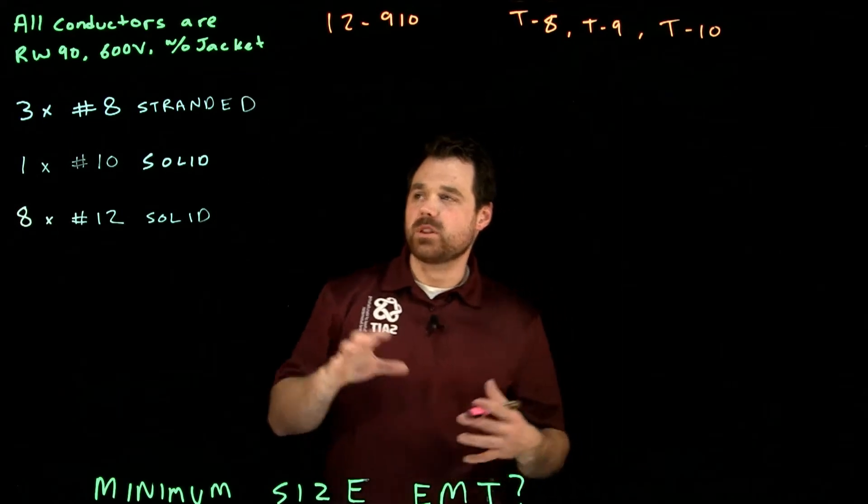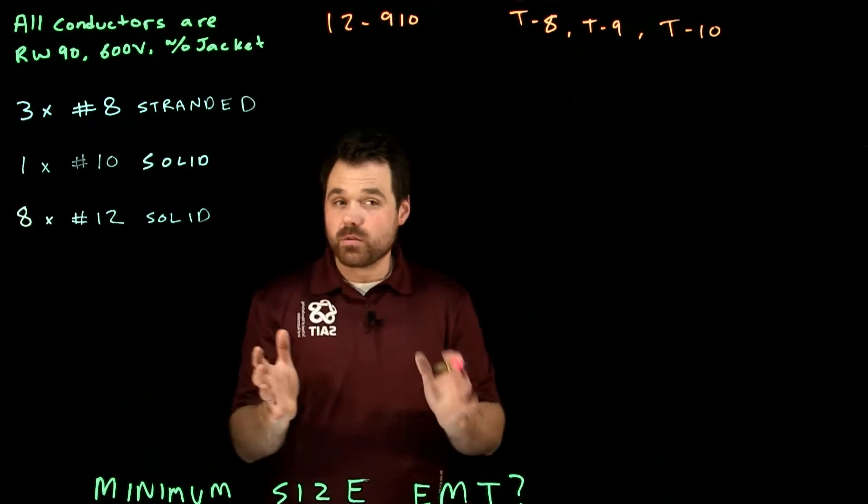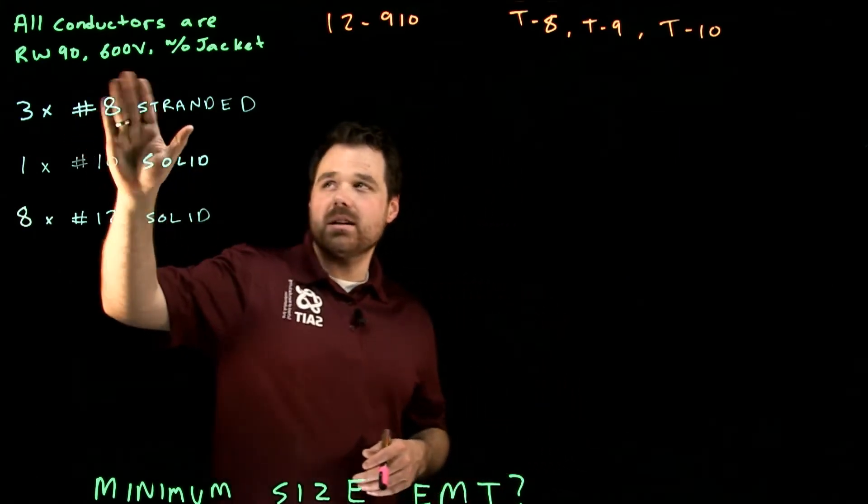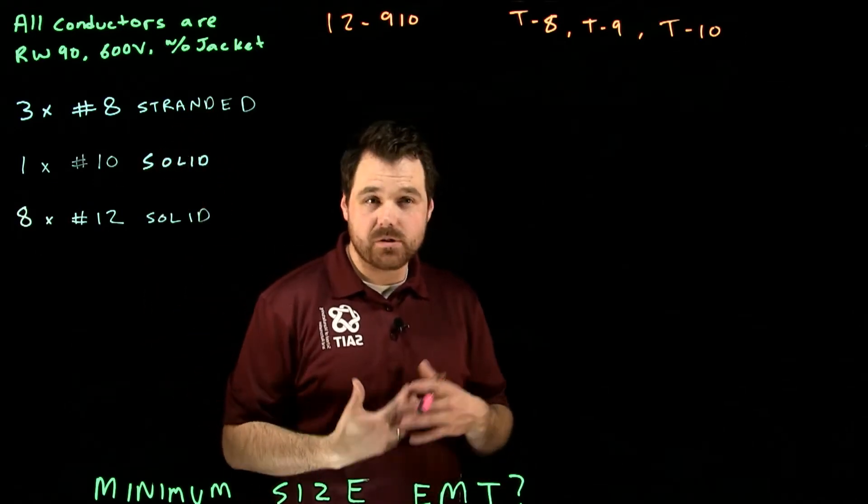So our first step with these is I need to go to table 10, A through D and figure out how big each of these conductors are. So we know they're RW90, 600 volt without jacket, but we have some stranded conductors and some solid conductors.